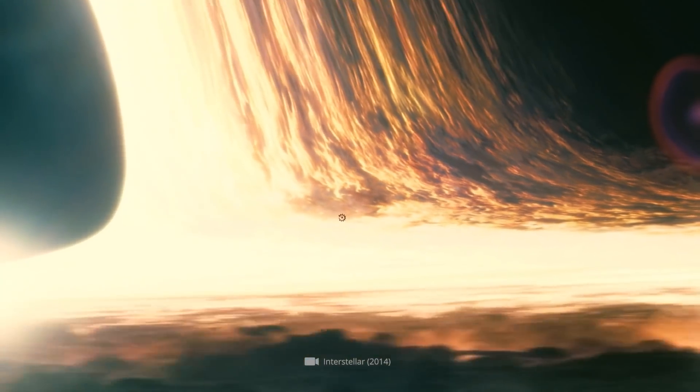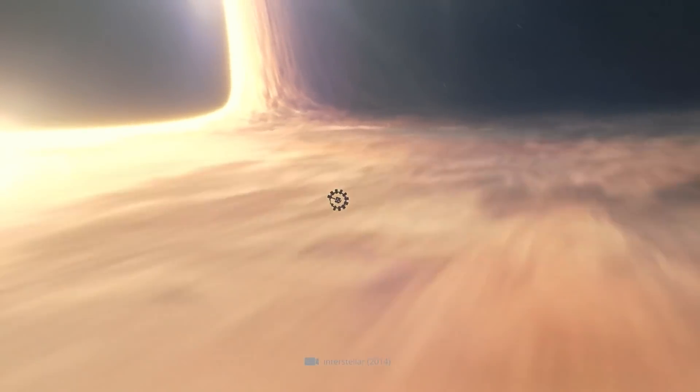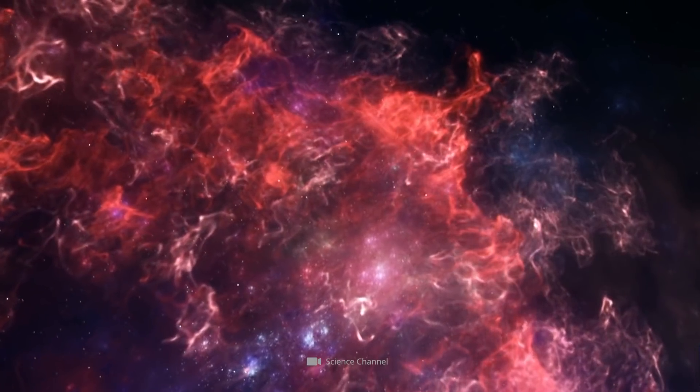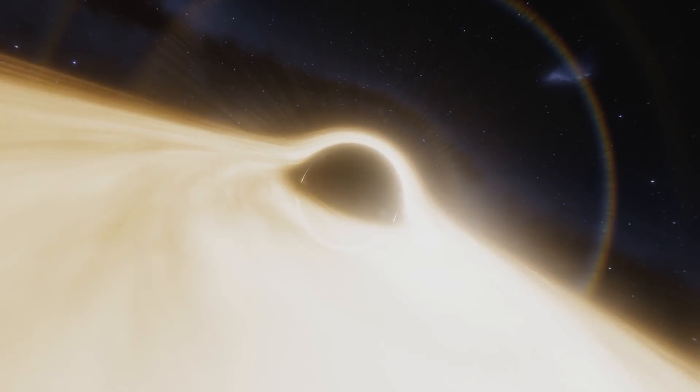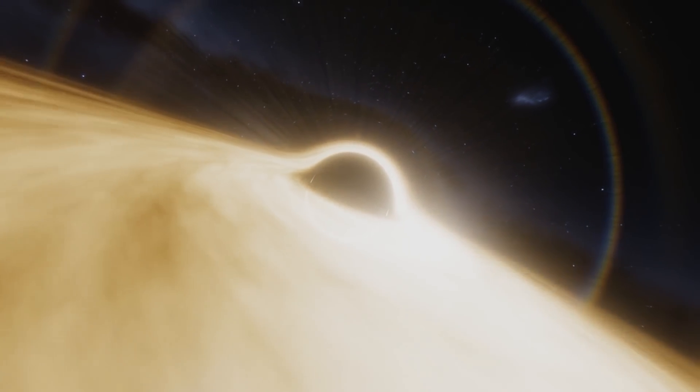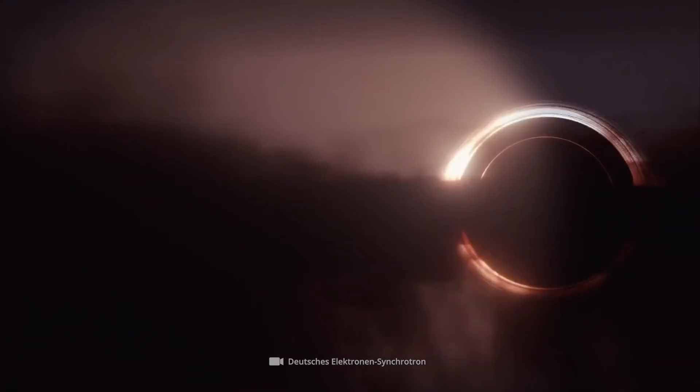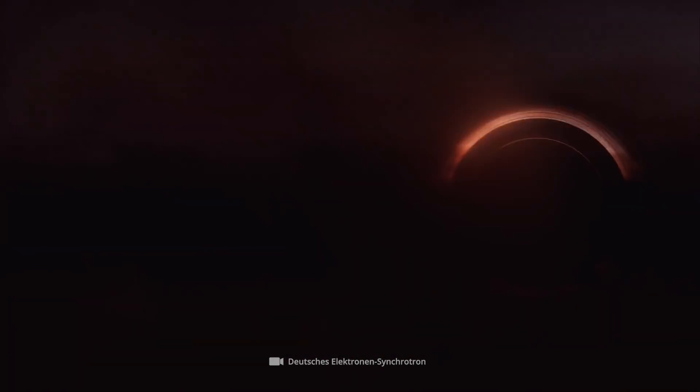Accretion disks around black holes can, in turn, heat up to millions of degrees, consequently releasing immense amounts of radiation. The cosmic fuel with which supermassive black holes are supplied in this way is mainly composed of dust and gas deposits that fill the surrounding space.